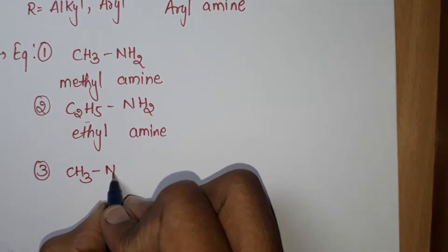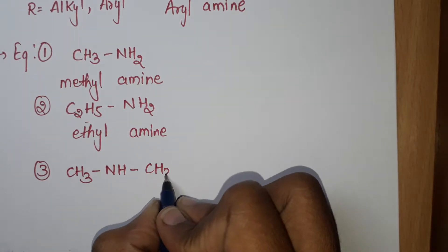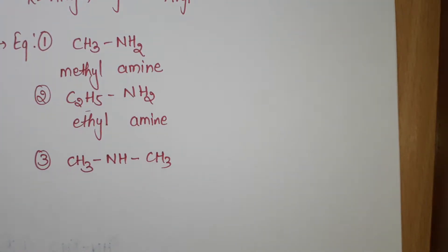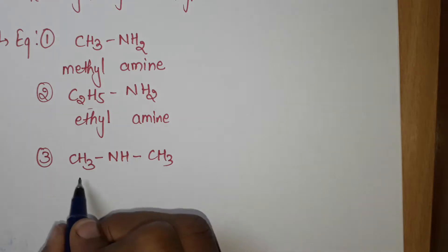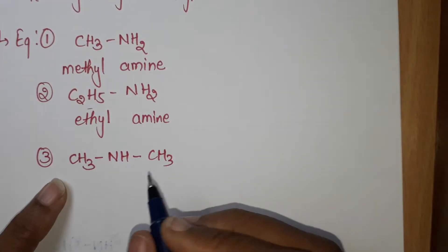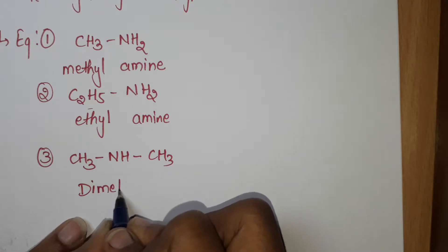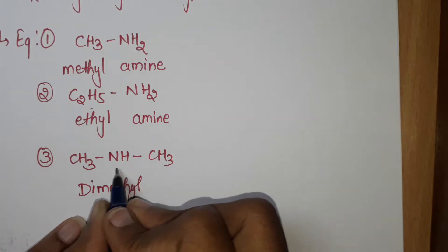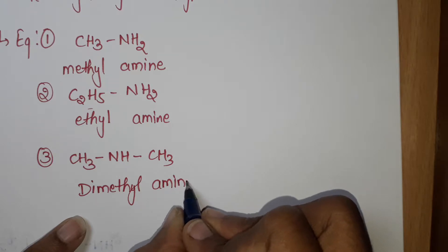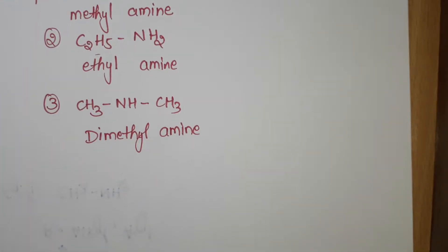Next example: (CH3)2-NH. What is the name of this compound? Here two methyl groups are present, so it is dimethyl amine.